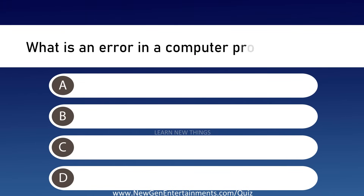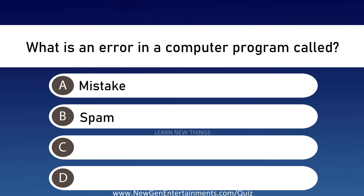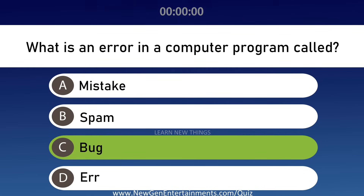What is an error in a computer program called? Options are A: Mistake, B: Spam, C: Bug, and D: Error. Answer is Option C, Bug.